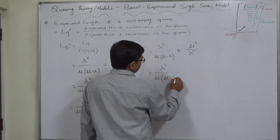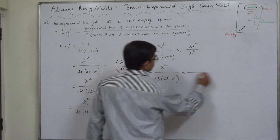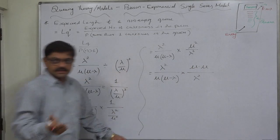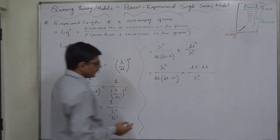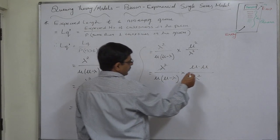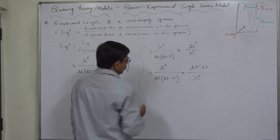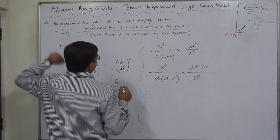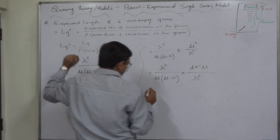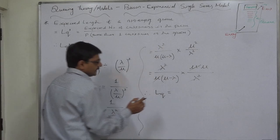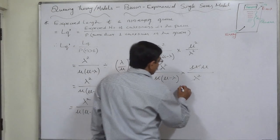This remains as it is, but mu square means mu into mu upon lambda square. This is just a matter of cancellation: we can cancel lambda square and lambda square, and mu and mu. So ultimately the formula to calculate expected length of a non-empty queue, lq dash or lq apostrophe, comes in its simplest form to mu upon mu minus lambda.